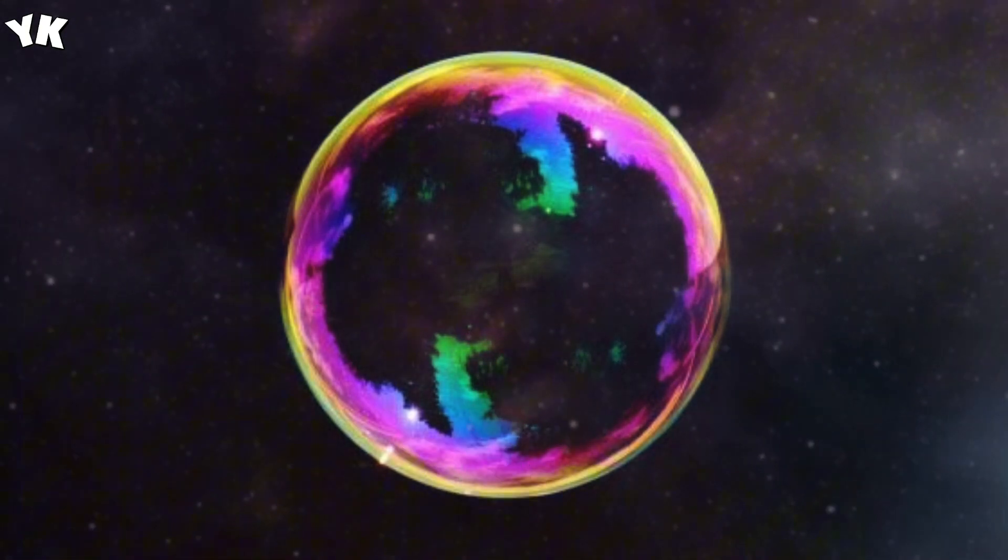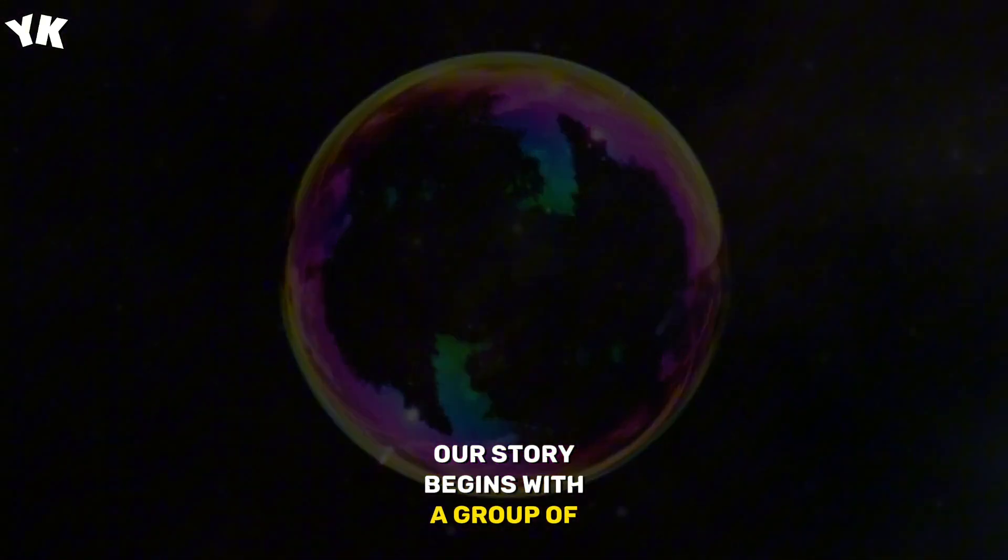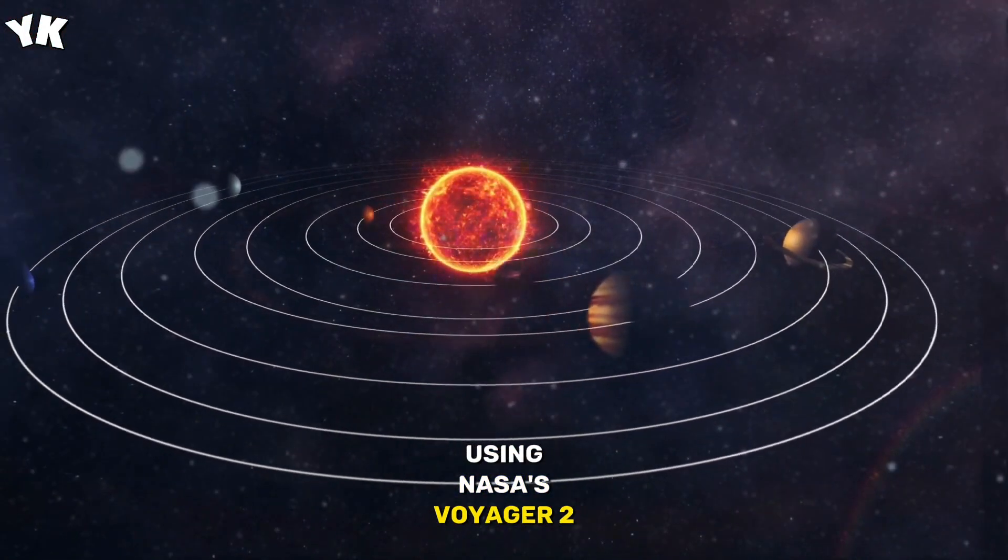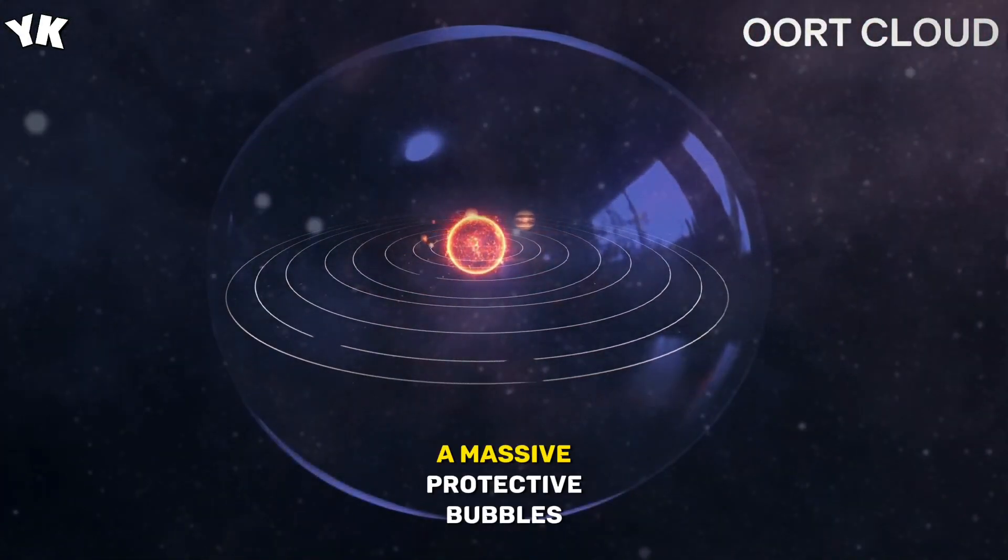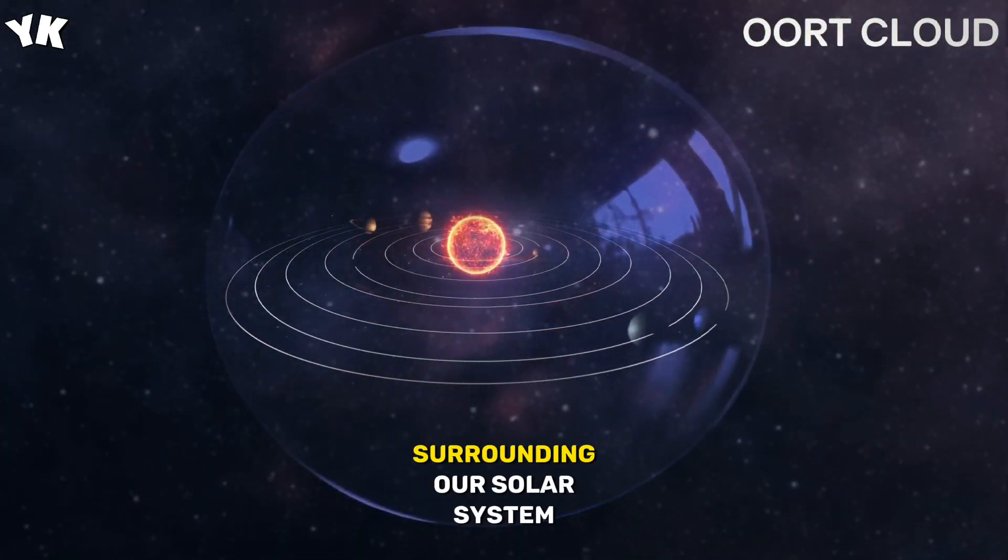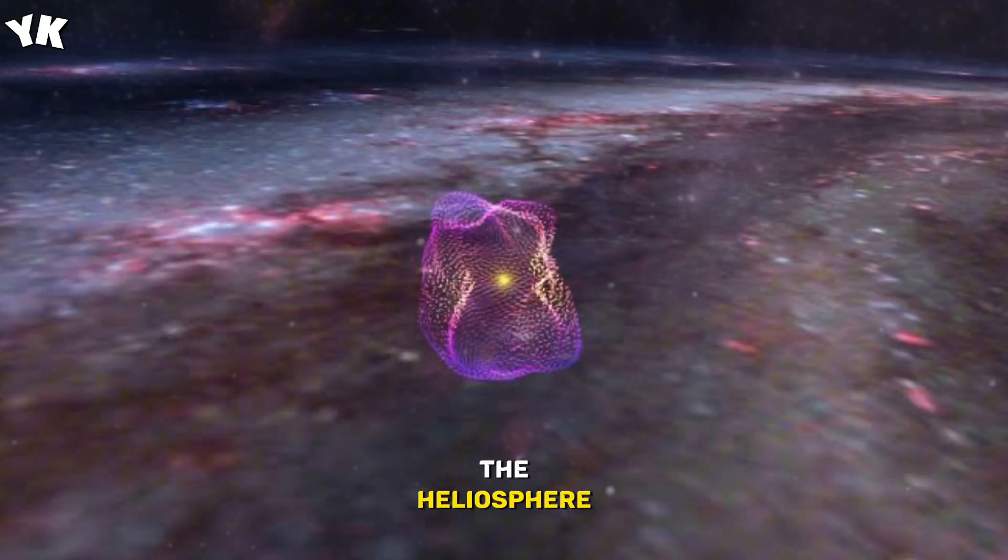The discovery. Our story begins with a group of astrophysicists using NASA's Voyager 2 spacecraft. They made an incredible find: a massive protective bubble surrounding our solar system, the heliosphere.